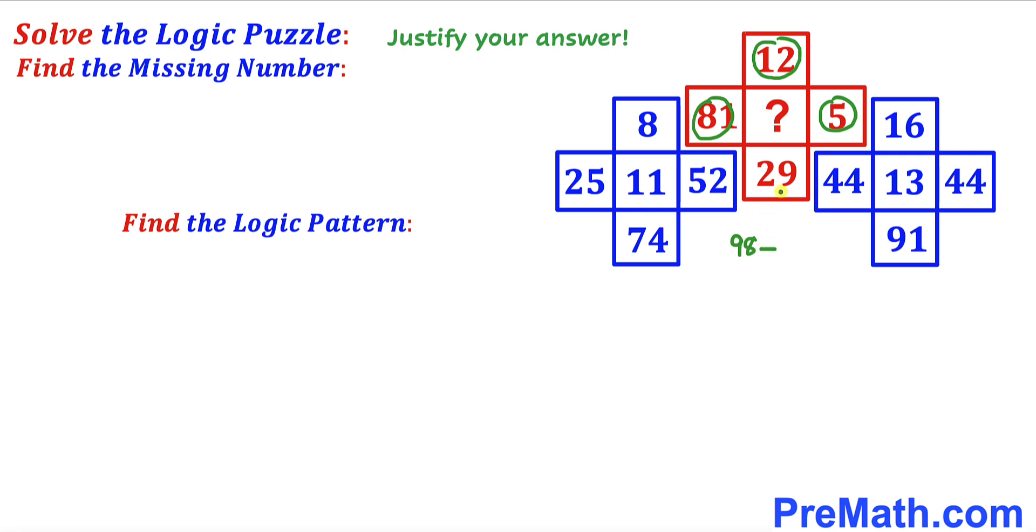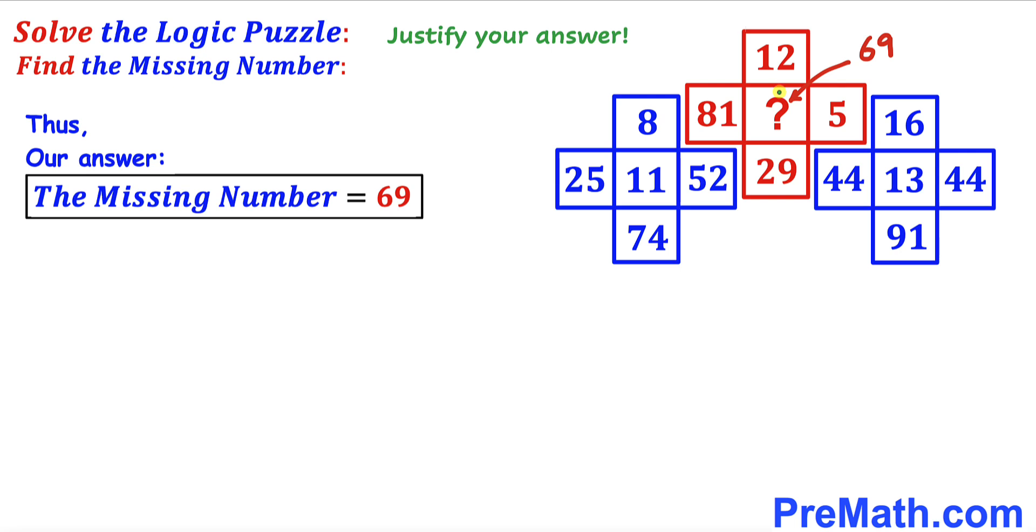we are going to subtract 29 from this one. So if we subtract, that is going to give us 69. Therefore our middle number turns out to be 69. Thus our missing number turns out to be 69.